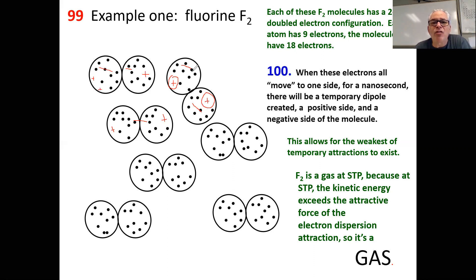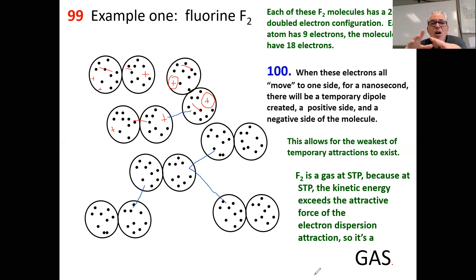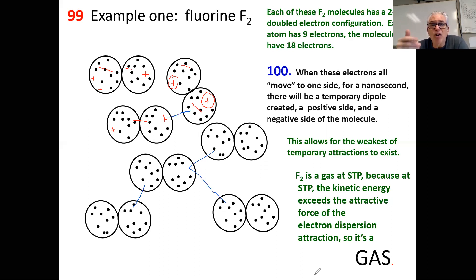What happens is: a little positive area and a little negative area are going to be slightly attracted together — slightly. This negative area is going to be slightly attracted to that positive; this positive will be slightly attracted to that negative. For a nanosecond there are different positive and negative moments — we call them moments — on the electron orbital cloud, creating a certain positive-negative intermolecular attraction. This moment-to-moment attraction with the motion of all 18 electrons is a legitimate, real, measurable attraction.